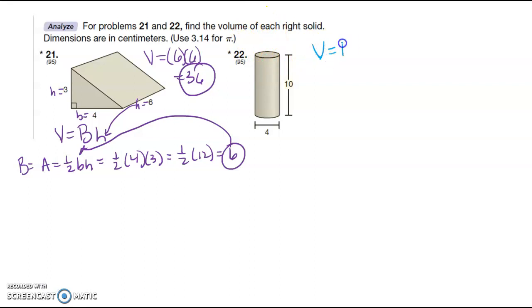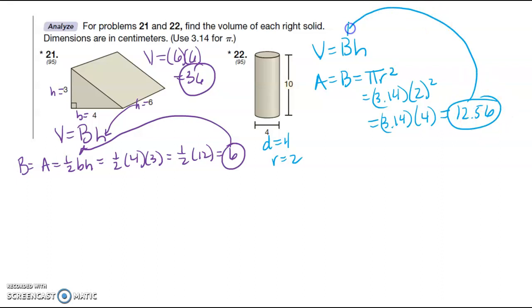Over here, same thing. Volume is equal to the area of the base times the height. Area of the base is equal to pi R squared, because it's a circle. Here I have the diameter as 4, so my radius is going to be 2, 3.14 times 2 squared, 3.14 times 4, which is 12.56. This is going to go up here, and then this is going to be our height. So we have 12.56 times 10, which gives us 125.6.